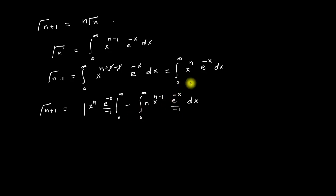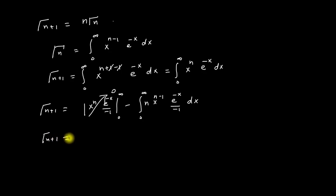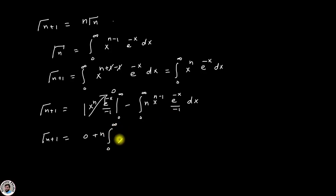When I apply the upper and lower limits, the first term becomes equal to zero. So Gamma(n+1) equals zero plus n — since the two minus signs cancel to give a plus — and we get n times the integration from zero to infinity of x to the power (n minus 1) times e to the power (minus x) dx.